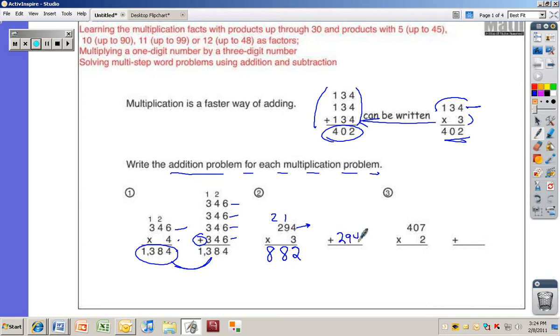I like to start at the bottom. That way I know how much space I need. 294, 294, 294. 4, 4, 4, that makes 12. Carry the 1. 27 plus 1, 28. 2, 4, 6, 8, 882.